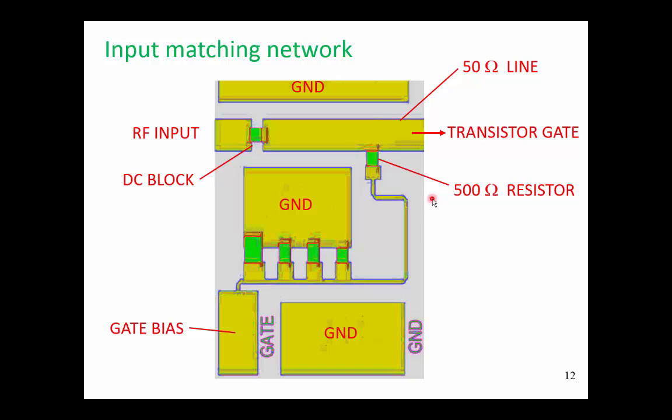One of the key ideas here, and this is common with a lot of input matching network designs, is the use of this 500 ohm resistor. That 500 ohm resistor acts as an RF block. If this resistor is about 10 times that 50 ohm, then it pretty much looks like an RF open circuit.